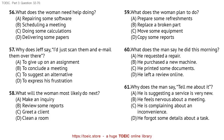Questions 59 through 61 refer to the following conversation. Stephen, are you still using the photocopier in the break room? I need to copy the budget reports for the meeting tomorrow when you're done. Unfortunately, the copier seems to be acting up again. I called the repairman before lunch, but he won't be able to stop by until tomorrow. You should probably use the copier on the first floor instead. Thanks for letting me know. How many times have we called the repairman about that copier? It seems like he's here every week. Tell me about it. It's supposed to be such a durable model according to all the reviews I've read. It's disappointing. Number 59. What does the woman plan to do? Number 60. What does the man say he did this morning? Number 61. Why does the man say, 'Tell me about it'?